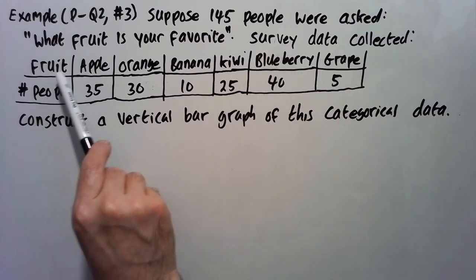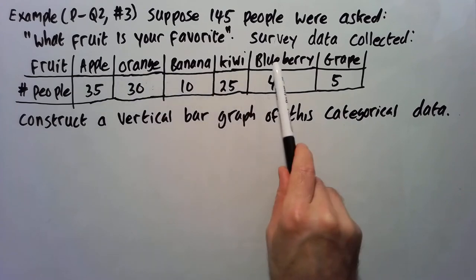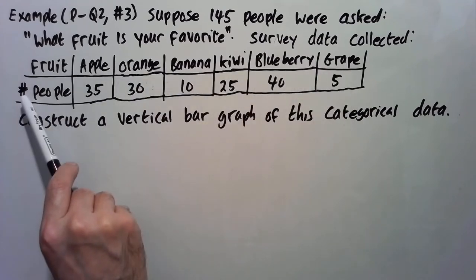So you have the fruit typed up here. So apple, orange, banana, kiwi, blueberry, grape, and number of people who chose each type of fruit.